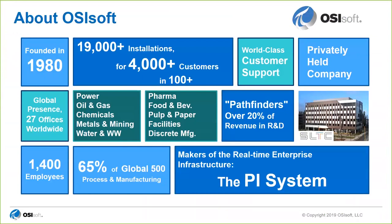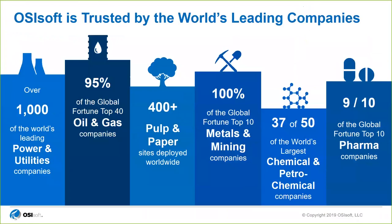About 65% of global 500 products and manufacturing companies use our software. Over 1,000 of the world's leading power and utilities companies use the software, 95% of the global top 50 oil and gas companies, and 400-plus pulp and paper companies.